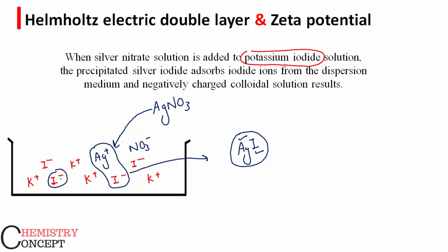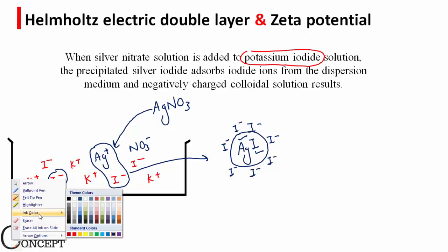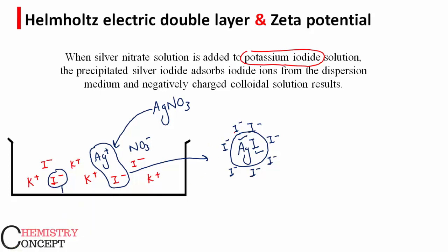So this silver iodide will attract these iodide ions on its surface and adsorb them there. The iodide ions are adsorbed on the surface of silver iodide colloidal particle formed. Adsorption, because of which the colloidal particle of silver iodide becomes negatively charged.